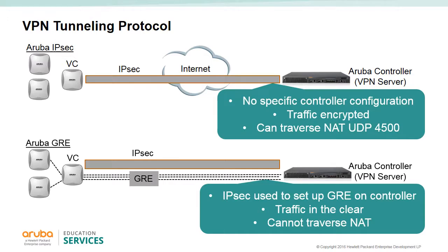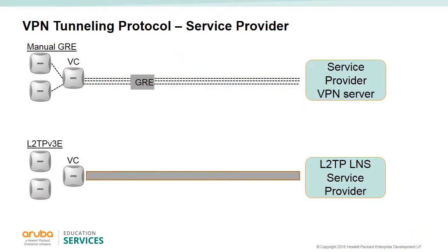Aruba GRE cannot traverse a NAT boundary. A manual GRE requires GRE tunnels to be explicitly configured on the GRE endpoint, which can be an Aruba mobility controller or any device that supports GRE termination. L2TP (Layer 2 Tunnel Protocol) allows an IAP to act as an L2TP access concentrator and tunnel all wireless service clients with L2 traffic from the AP to an L2TP network server.